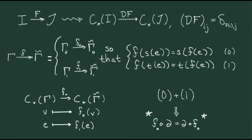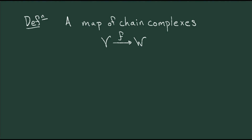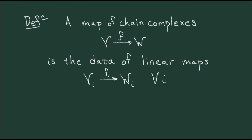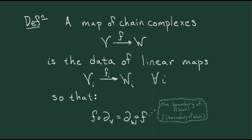Personally, I like to think of this map as like the derivative of the map between graphs. So let me enumerate the data and conditions present in a general map of chain complexes. A map of chain complexes f from V to W is the data of, for every single degree i, a map f_i from V_i to W_i. In particular, it sends vectors of degree k in V to vectors of degree k in W. Moreover, f must send the boundary of v in V to the boundary of f(v) in W. As with graphs, I interpret this condition as a continuity condition, so that I can think of a map of chain complexes as a continuous linear map.